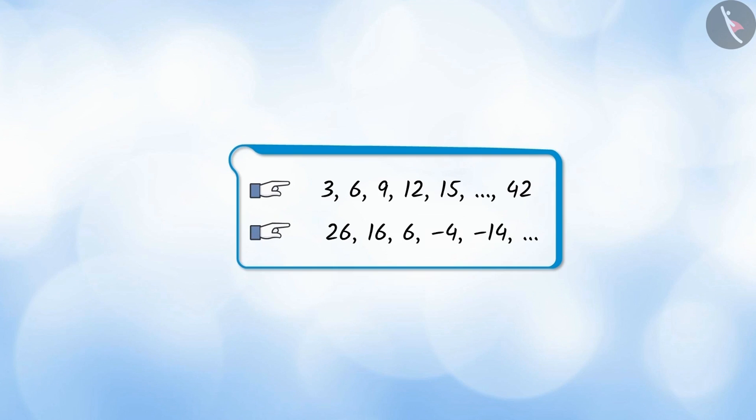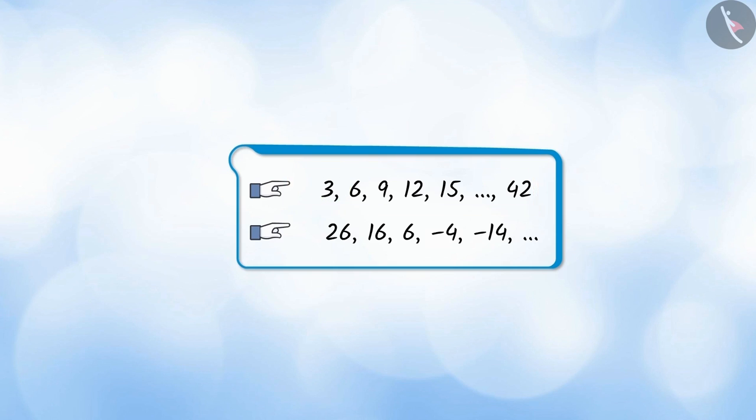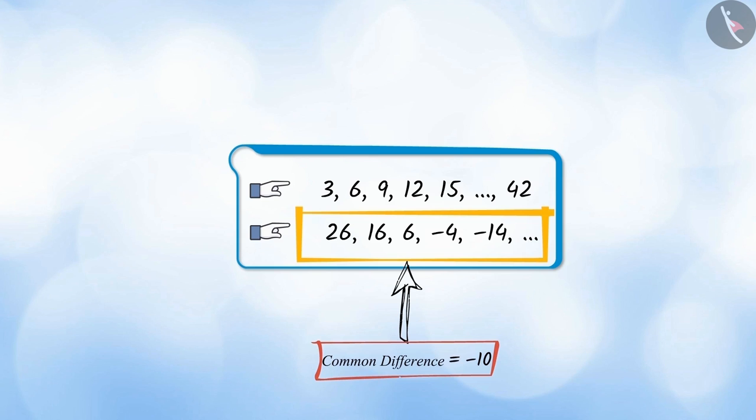We are given two categories here, where the first term of the first category is 3 and the common difference is also 3. And the first term in the second category is 26 and the common difference is minus 10.